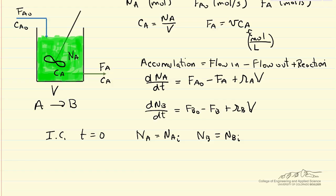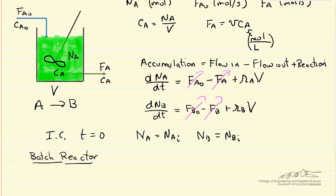Let's look at the case of a batch reactor. We start with the same general equation, but there's no flow into the reactor — that term goes to zero — and there's no flow out. So the equations just reduce to two simplified expressions for the batch reactor.